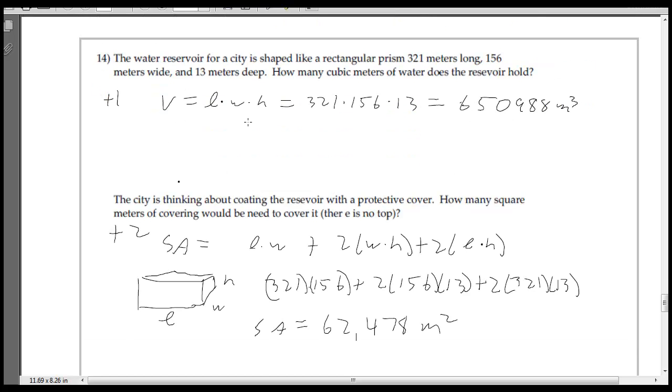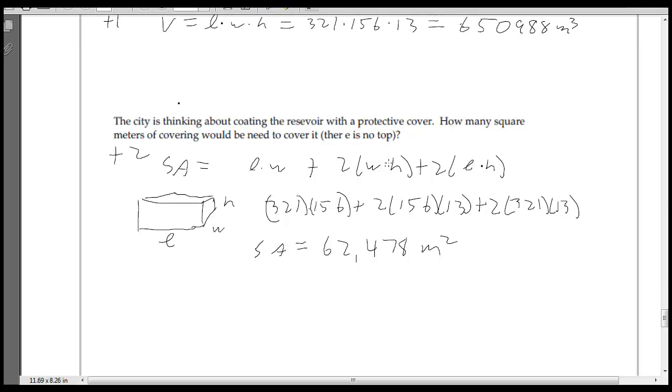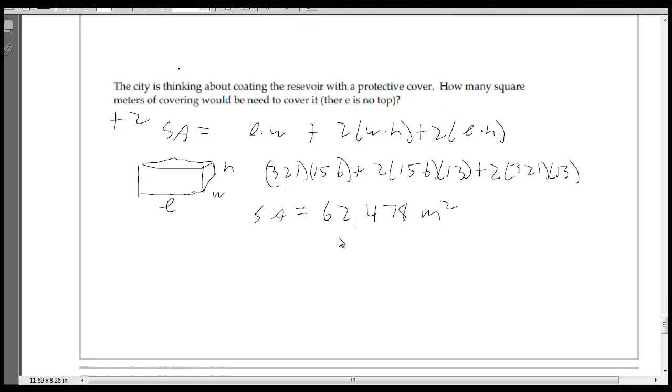On 14, just find the volume. Length times width times height. There it is. 650,988 meters cubed. And the last one, the only tricky part here was, since you're trying to find the protective covering, which is the surface area, and it doesn't have a top. It's a reservoir, so it seems like a big tank. So you just take the length times the width, which is the area of the base right here, but we don't double it because we don't have a top. And then we do the sides here, but we do double them because there's two sides. It gives you total surface area of 62,478 meters squared.